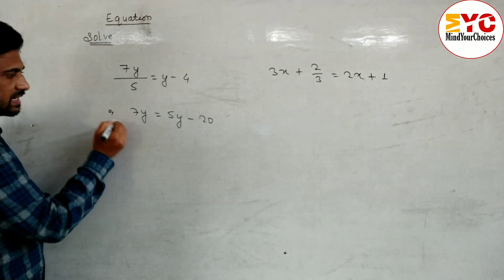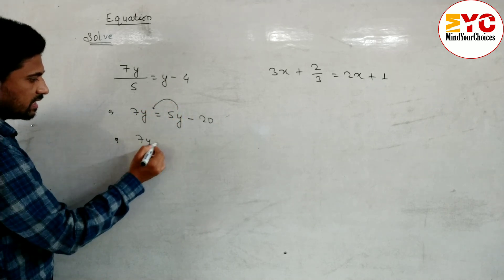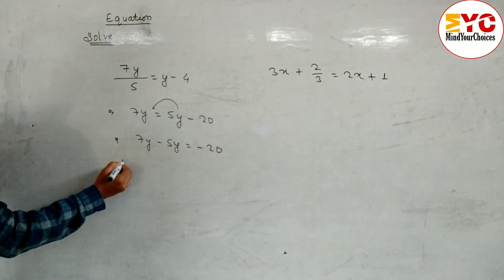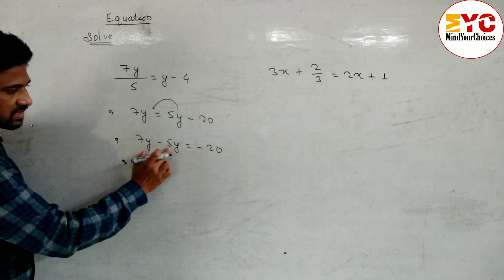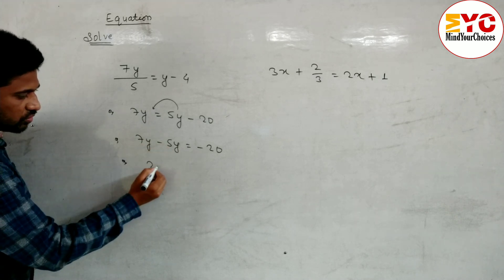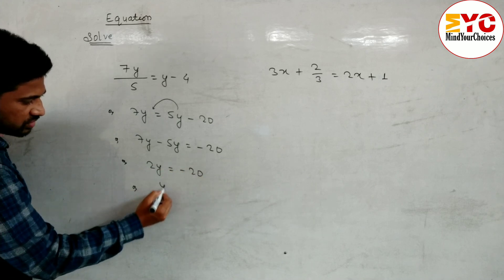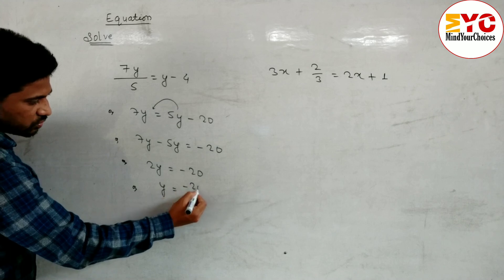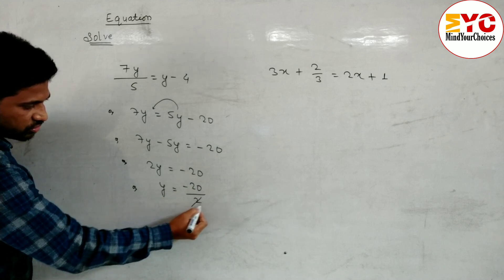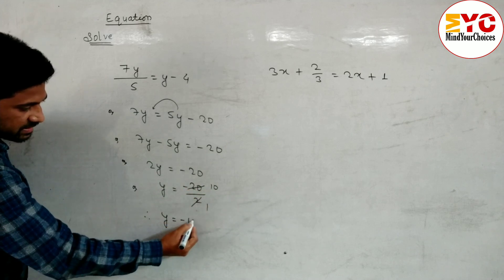After this we have to arrange like terms. These two are unlike terms, so 5y we have to take to the front. So 7y minus 5y is equal to minus 20. When you subtract, 7 minus 5 equals 2, so 2y is equal to minus 20. Now these two are in multiplication so we have to divide: y is equal to minus 20 by 2. We can cancel — 2 tens are 20. Therefore the value of y is equal to minus 10.